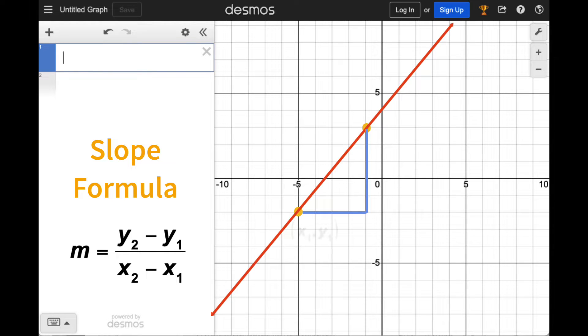One point has coordinates x1 and y1. The other point has coordinates x2 and y2. The slope formula calculates m, the slope, using this ratio expressed as a fraction. The numerator consists of the difference in the y coordinates. The denominator consists of the difference in the x coordinates.